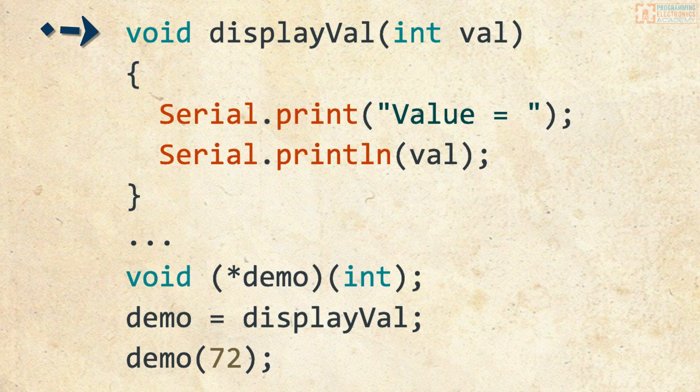So here we've got a function called displayVal. DisplayVal doesn't return any values, hence we've got the void at the beginning. And it takes one integer argument called val, and then it just prints off the value that you pass to it. And what we've done is created a function pointer named demo. The function that it points to must not return any values, hence the void at the beginning, and it's going to take a single integer as its parameter. And what we've done is pointed demo at the function displayVal. And now we can use demo just like we would displayVal.